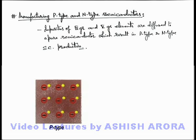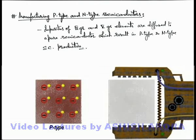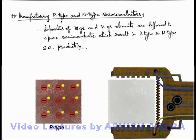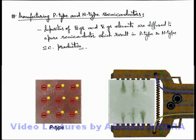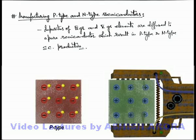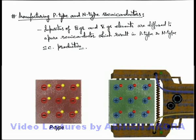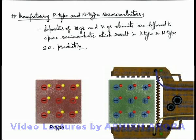Similarly, if we look at another pure semiconductor substrate of silicon — through another diffusing device, if a donor doping is induced into it, that is a fifth group element — when these fifth group elements replace some of the silicon atoms in the lattice, they become positive ions, because each fifth group element loses an electron to the conduction band. Here you can see the dot in the neighborhood of this positive ion represents an electron. This is the way how p-type and n-type semiconductors are produced.